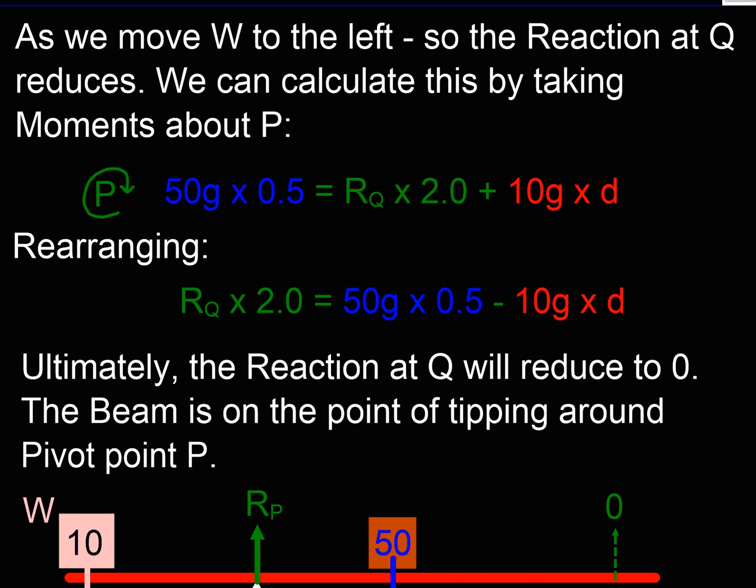So if I do that, and everything's still in balance, everything's still stable, the moment in the clockwise direction is being balanced off by the two anticlockwise moments. One of them's the reaction force, and the other one is our new weight that we've applied. And if we rearrange that, we can see that the reaction force moment is going to be the weight moment minus the new weight.